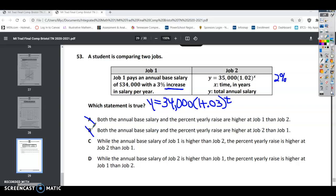Now C says while the annual base salary of job 1 is higher than job 2. Job 1, so the base salary for job 1 is higher than job 2. That's false. $34,000 is lower, not higher, so this would be lower. And so that one can't be true, so let's see the last one.